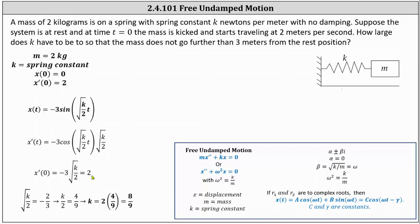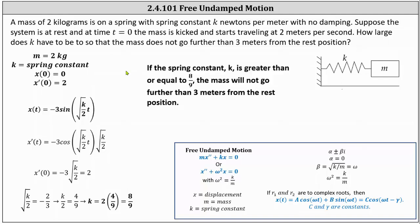Now we solve for k. We first divide both sides by negative three and then square both sides to get k divided by two equals four ninths, and therefore k equals eight ninths. So if the spring constant is eight ninths, the mass will travel exactly three meters from the rest position. If the spring is more stiff, or if the spring constant is greater than eight ninths, the mass will travel less than three meters. In summary, if the spring constant k is greater than or equal to eight ninths, the mass will not go further than three meters from the rest position.